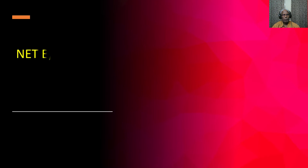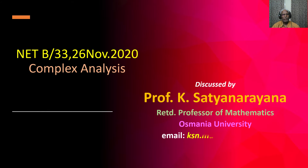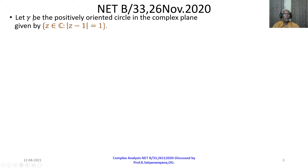Today we will discuss a question that appeared in the National Eligibility Test NET on 26th November 2020. It is under Section B, question number 33, on the topic of complex analysis. Let gamma be the positively oriented circle in the complex plane given by the set of all z belonging to C such that the modulus of z minus 1 is equal to 1.